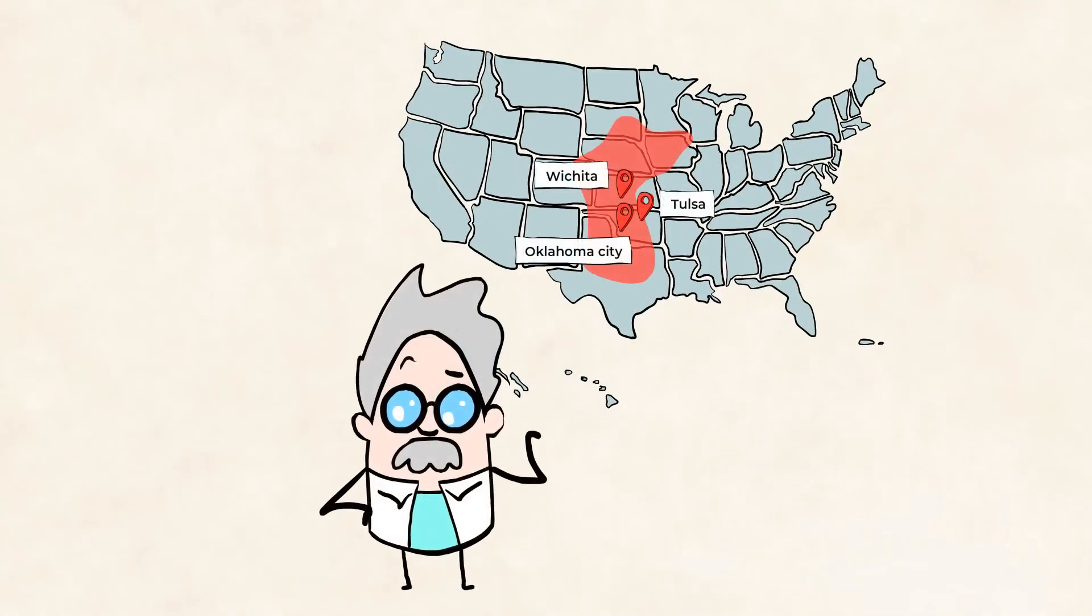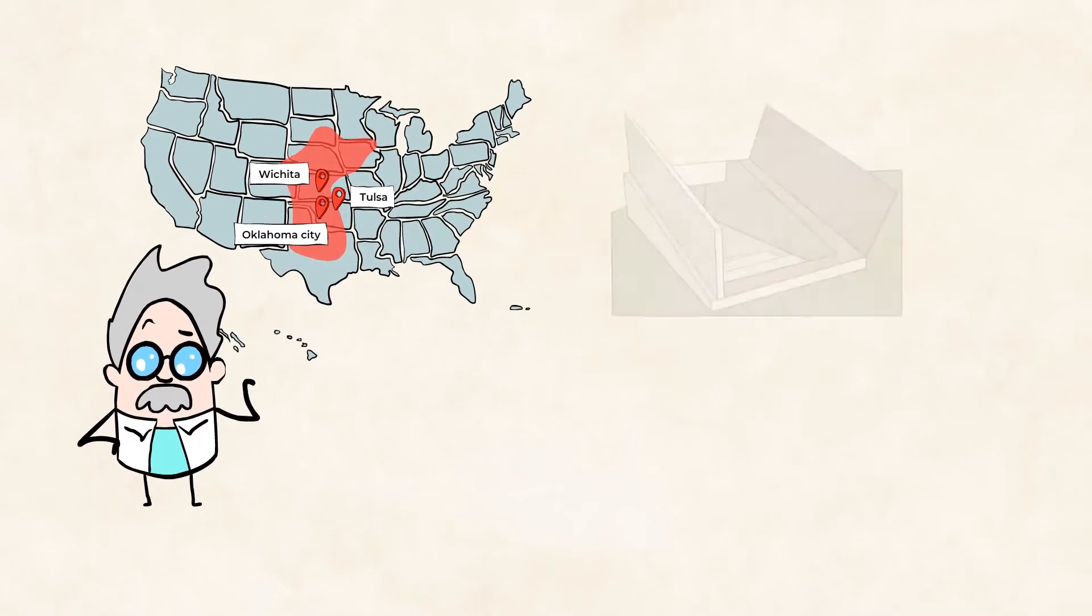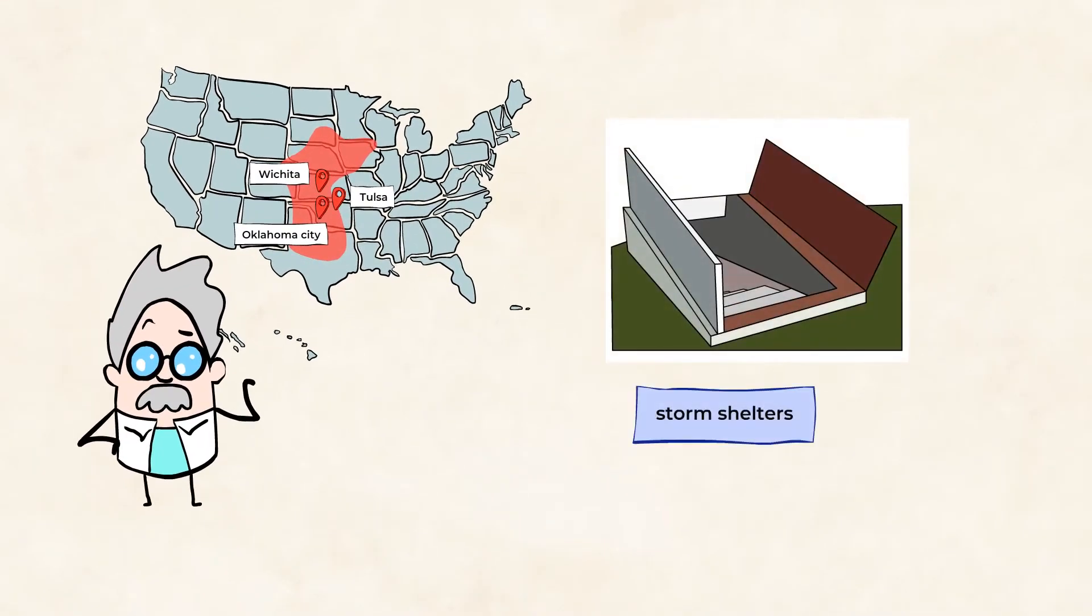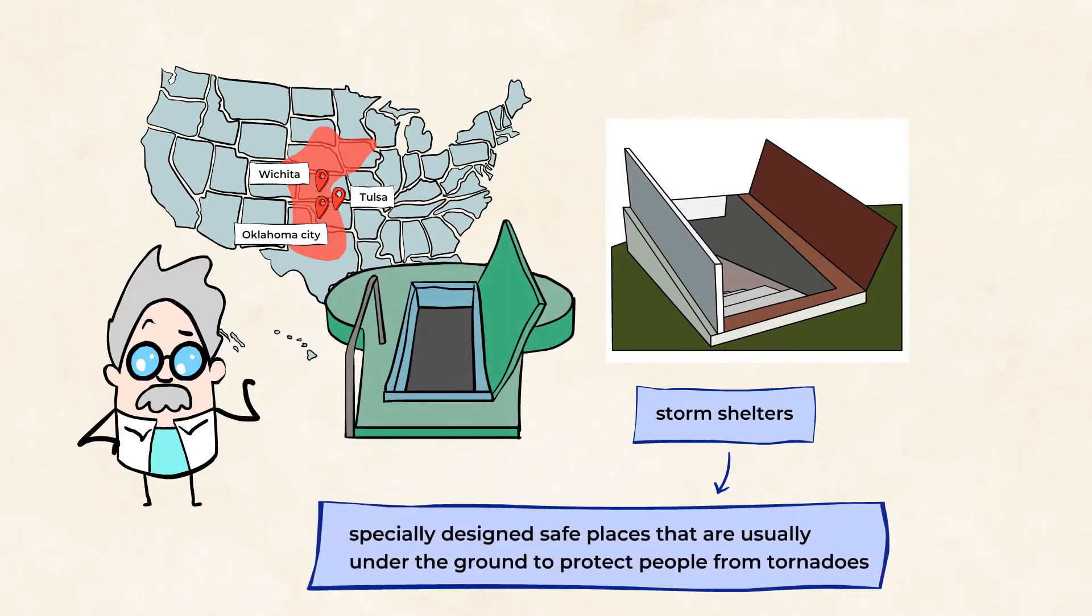People living in this area have to be prepared at any given moment for a tornado. Engineers have developed different solutions like storm shelters to protect them.